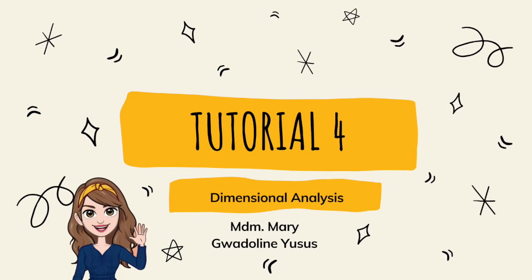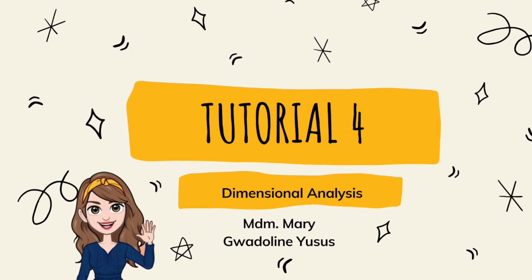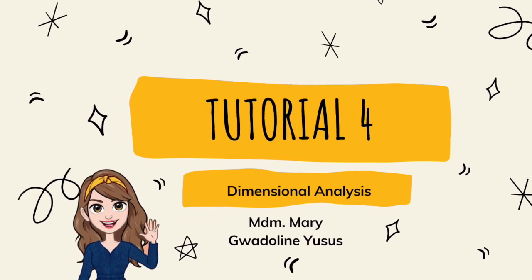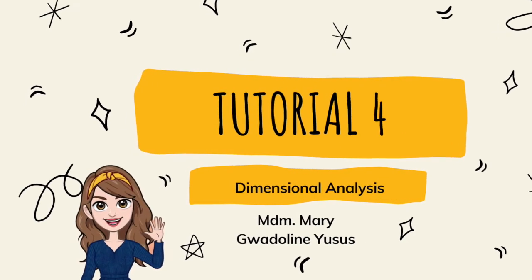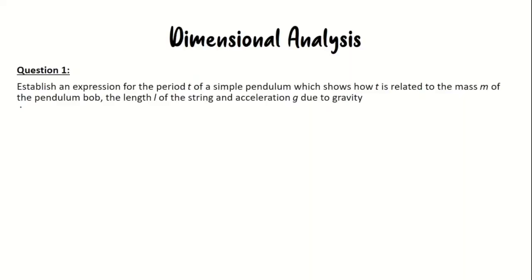Hi, welcome to my fourth tutorial video where we're going to do an example on dimensional analysis. Dimensional analysis is a method to derive an equation. Let's start with question one, which asks to establish an expression for period T in terms of mass, length of the string, and acceleration due to gravity g.